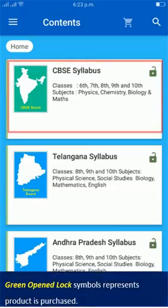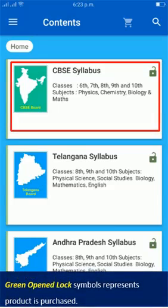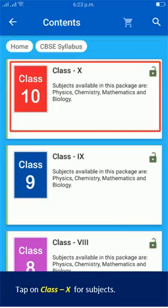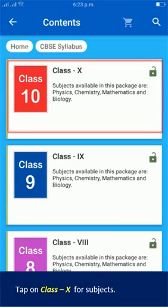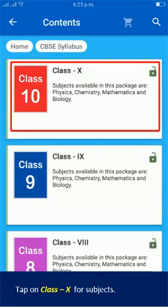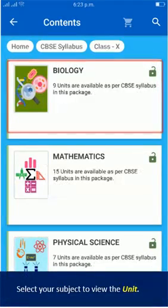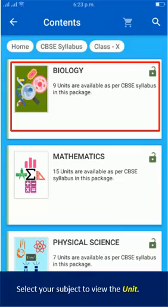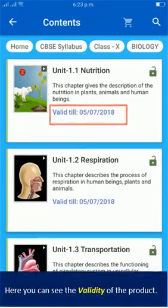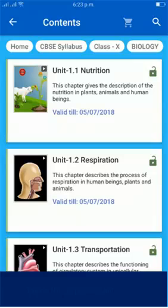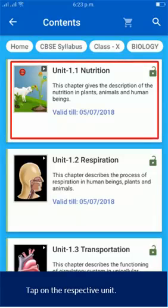The green opened lock symbol represents that the product is purchased. Tap on Class 10 for subjects and select your subject to view the unit. Here you can see the validity of the product. Tap on the respective unit.